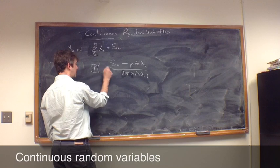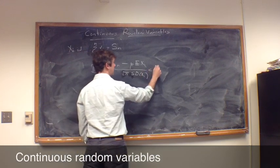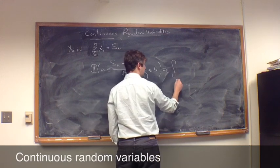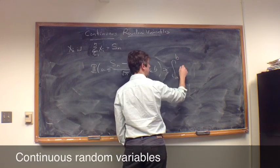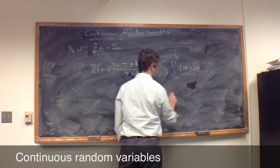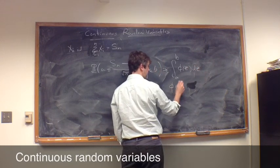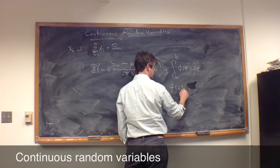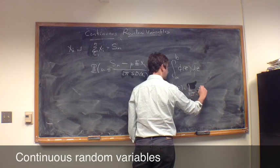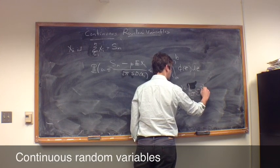The probability that this is in between a and b was well approximated by the integral from a to b of the standard normal distribution function, little phi, which is written as one over square root of two pi e to the minus z squared over two.